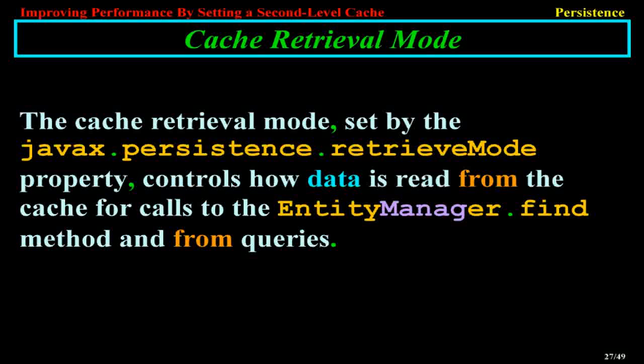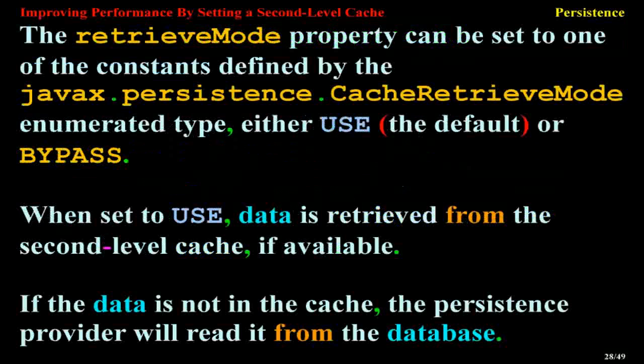Cache Retrieval Mode. The cache retrieval mode, set by the javax.persistence.cache.retrieveMode property, controls how data is read from the cache for calls to the EntityManager.find method and from queries. The retrieveMode property can be set to one of the constants defined by the javax.persistence.CacheRetrieveMode enumerated type: either USE (the default) or BYPASS. When set to USE, data is retrieved from the second-level cache if available; if the data is not in the cache, the persistence provider will read it from the database.